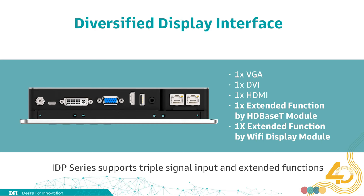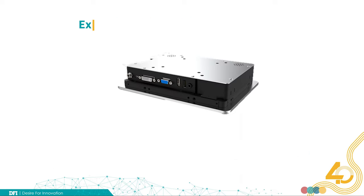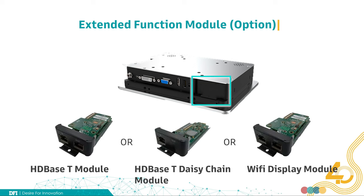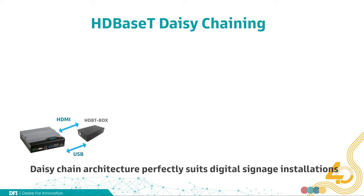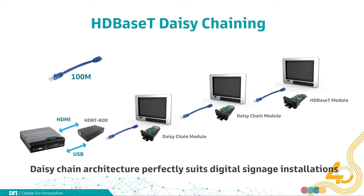IDP Series supports VGA, DVI, and HDMI interface display signals and can be modularized to expand HDBaseT or Wi-Fi display. The Extend Function module is very convenient and easy to use — it is a removable module that can be swapped with different modules according to customers' requirements. The IDP Series can also use HDBaseT technology to achieve a daisy chain layout, connecting multiple monitors to extend distances, with up to 100 meters between each monitor.